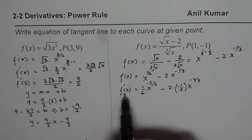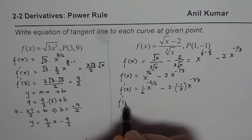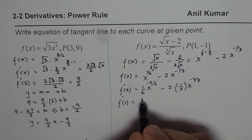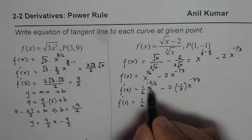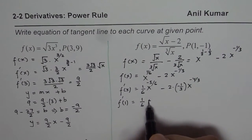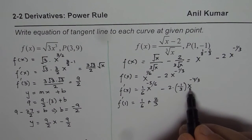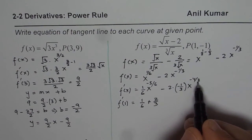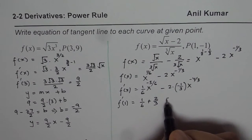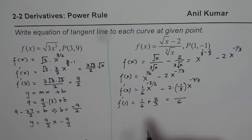We need to find the slope at x = 1. So f'(1) equals 1/6 — since 1 to the power of anything is 1 — plus 2/3, since the two negatives become positive and 1^(-4/3) = 1. To add these with denominator 6: 2/3 becomes 4/6, so 1/6 + 4/6 = 5/6. The slope is 5/6.